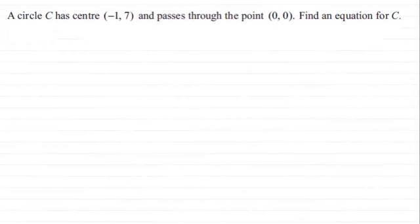Hi. In this question we've got a circle C with center (-1, 7) that passes through the point (0, 0), and we've got to find an equation for C.